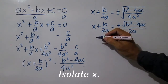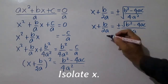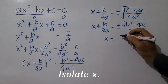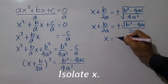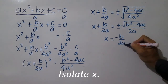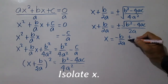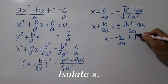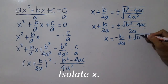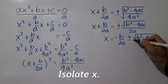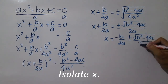Isolate x by subtracting both sides by b over 2a. So x equals negative b over 2a plus or minus the square root of b squared minus 4ac over 2a.